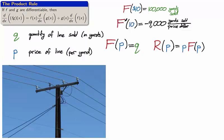The manufacturer estimates that f prime of 10 equals negative 9,000. In other words, the instantaneous rate of change in the yards sold per dollar in price is negative 9,000 when the price is $10. The instantaneous rate of change is to lose 9,000 yards in sales for every dollar that the price is raised.